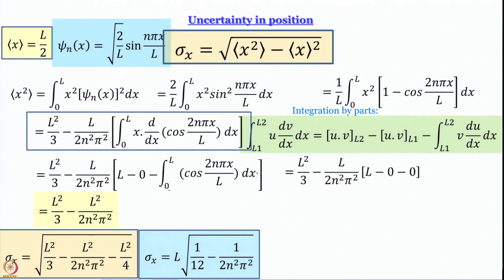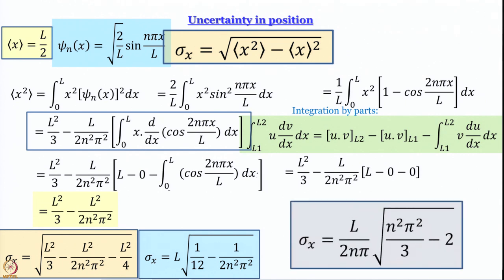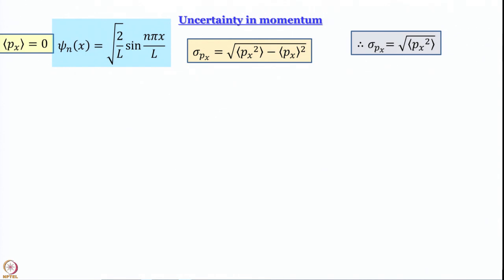The crux of the matter is we now have this expression for uncertainty in position. Now let us seek the expression for uncertainty in linear momentum, which is going to be much easier than uncertainty in position. We already know that out of the two terms under the square root needed for uncertainty in momentum, the average value of p_x is actually equal to 0.